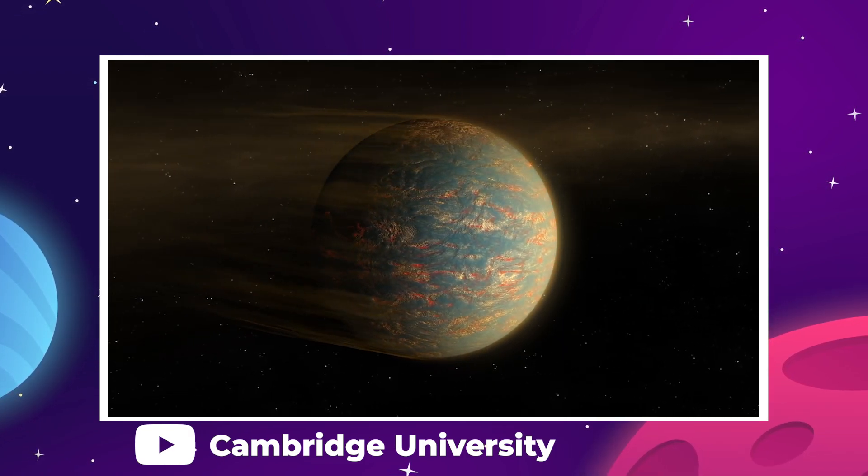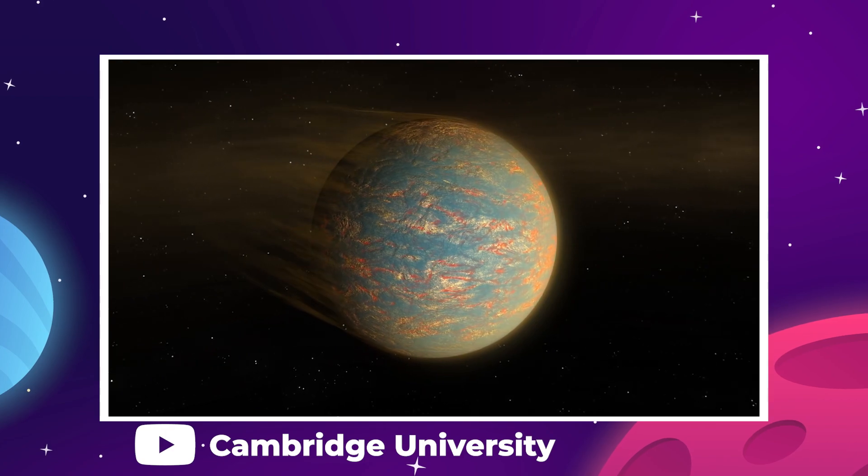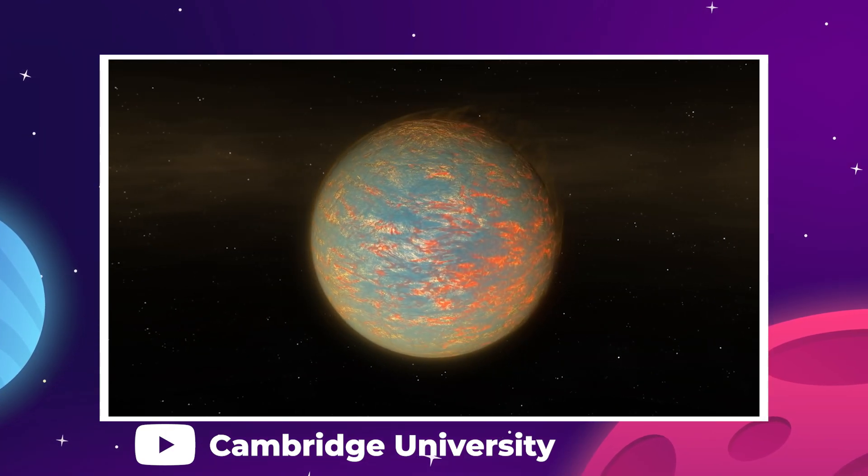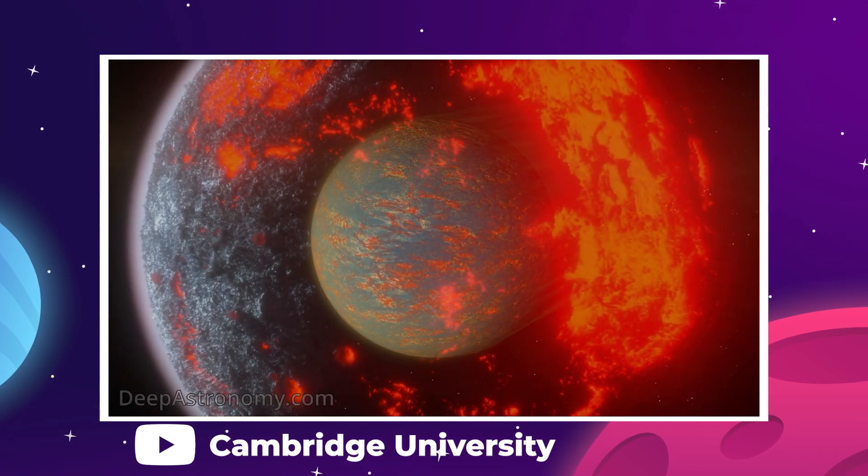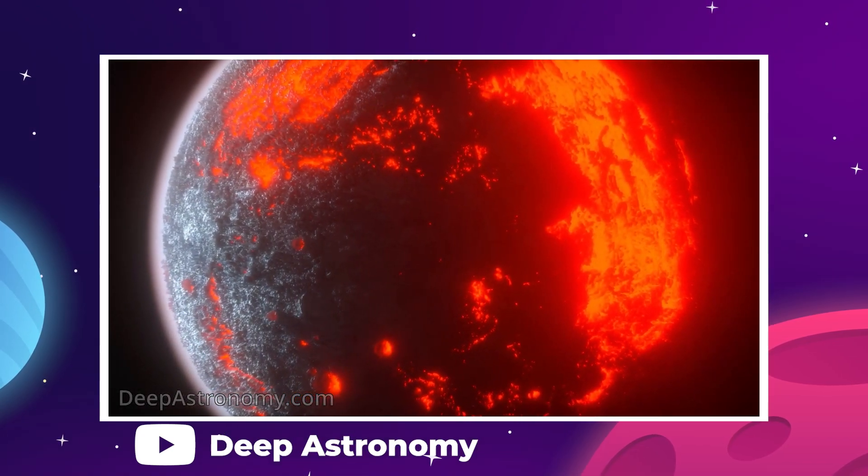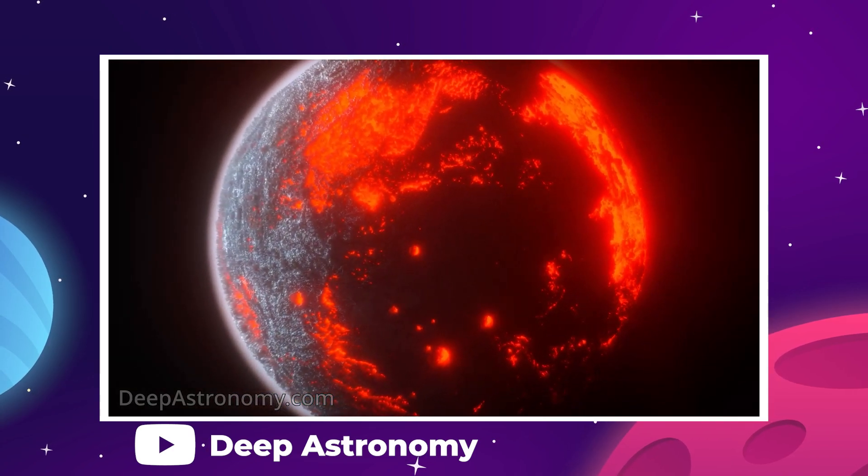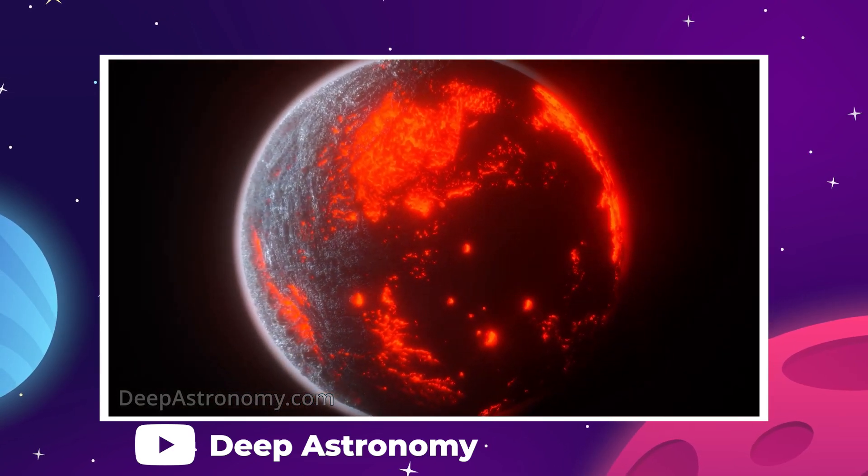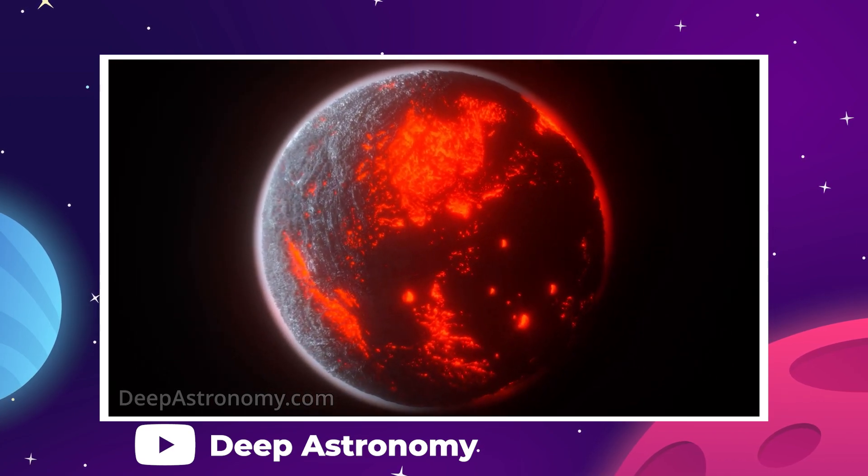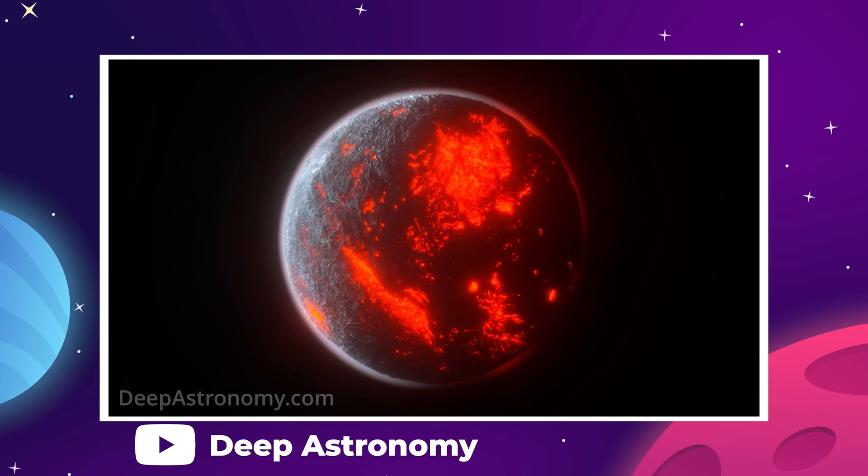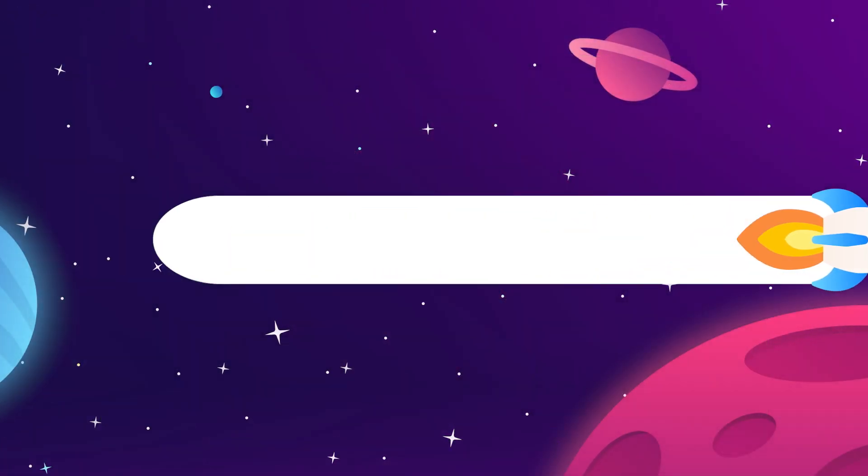However, most people reporting on this particular planet didn't get the memo that the diamond theory was debunked years ago. This planet likely doesn't contain nearly as much carbon as was previously believed, and it's likely more similar to a gas giant with a super critical fluid state of hydrogen and helium gases that flow around the surface like a liquid ocean. So, sorry to kill your dreams of interstellar diamond mining.